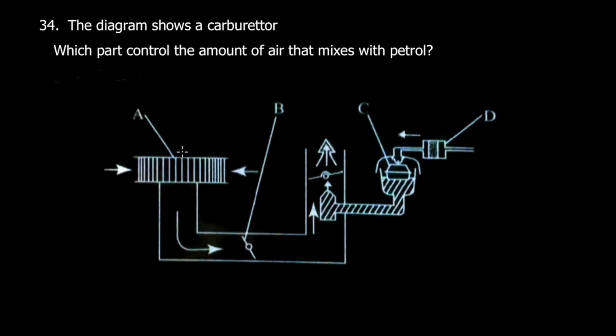This one is an air filter, and then you have air coming in here. This one is called the choke valve. The choke valve controls the amount of air that mixes with petrol. Here you have the throttle valve.